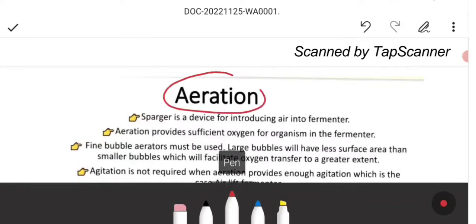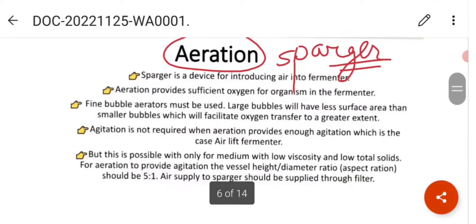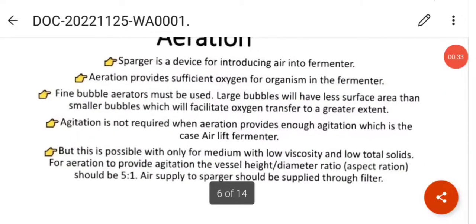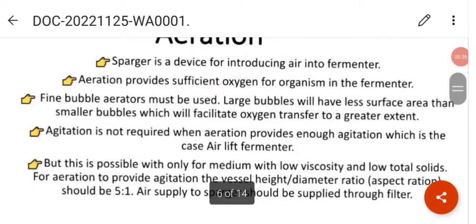If we talk about aeration, then in a bioreactor, we have the spargers. Spargers are in bioreactors, which introduce our air or oxygen into the media. Sparger is the device for introducing the air into the fermenter.